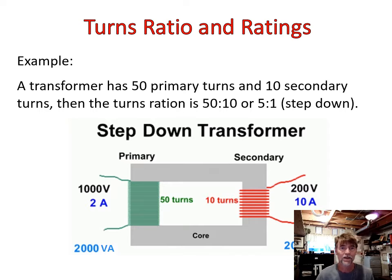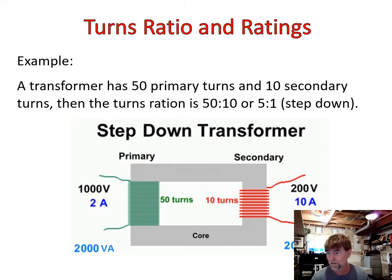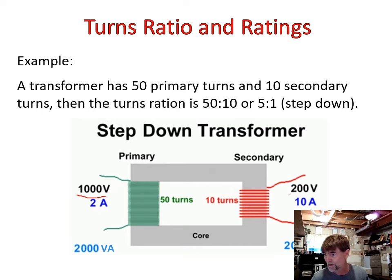Looking at another example: this transformer has 50 primary turns and 10 secondary turns, so the turns ratio is 50 to 10, which simplifies to 5 to 1 — same turns ratio, still a step-down transformer. With more numbers: the voltage steps down by a factor of 5 to 1, so 1,000 volts on the primary side gives us 200 volts on the secondary side. Now the current does the exact opposite.